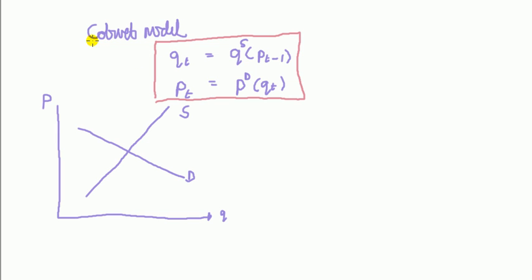Now this Cobweb model gets its name, you'll see in a moment, is because of the way, the nature in which this equilibrium, p star q star, is reached. Say, suppose we start at the period zero. So let's start the story. It always starts off with the supply side, because that starts at time period before everything else. So let's call it p zero.